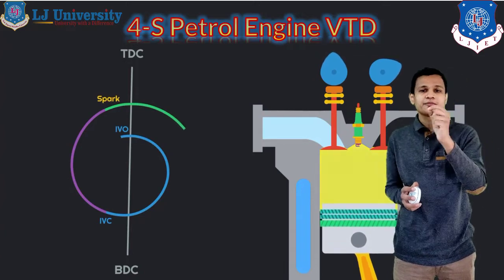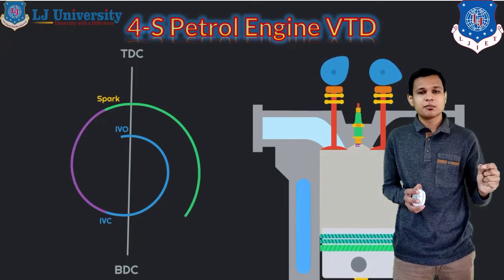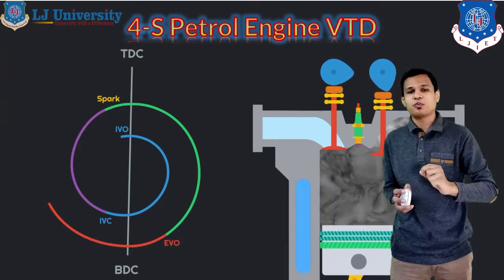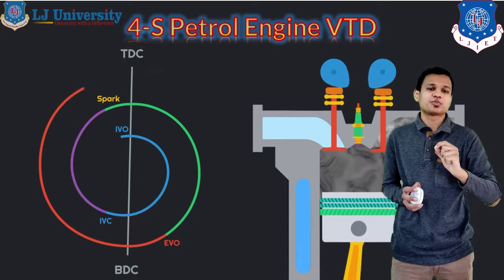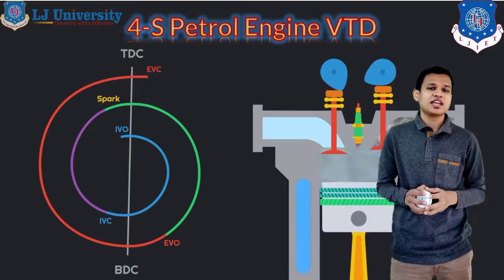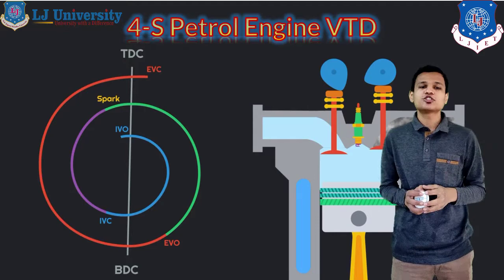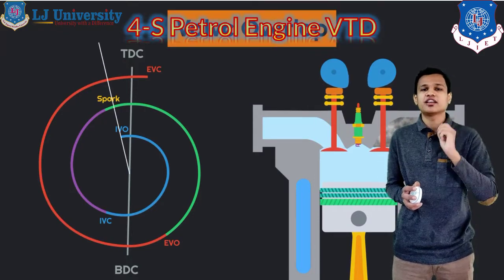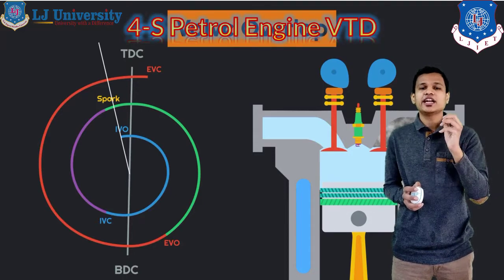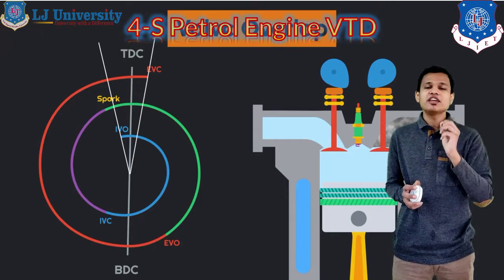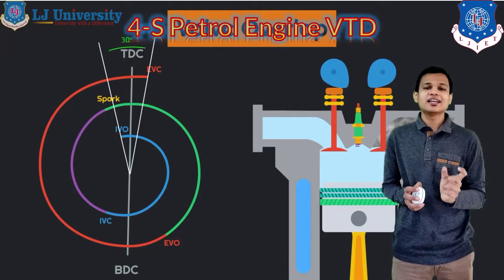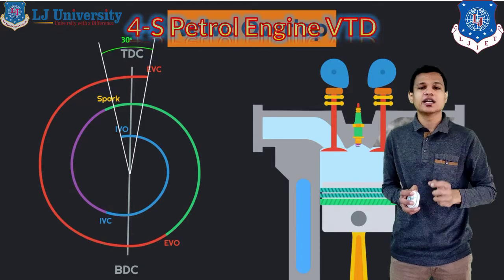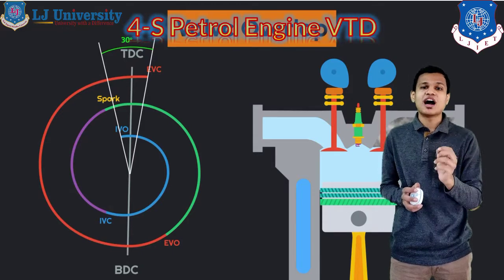The inlet valve is open before 20 degrees, then suction stroke happens, then compression, then expansion, and last is the exhaust process. In the exhaust process, 10 degrees plus 35 degrees means 45 degrees — the exhaust valve stays open for a longer time. At 30 degrees at the top you can see that during that period there is valve overlapping.